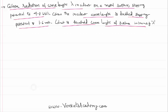We can solve it using Einstein's photoelectric equation. According to Einstein's photoelectric equation, the energy of the incident photon can be expressed as work function plus kinetic energy. This can be written as h*nu = hc/lambda = work function plus kinetic energy, which can also be written as eV₀, where V₀ is called the stopping potential.